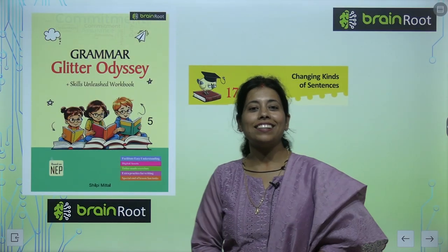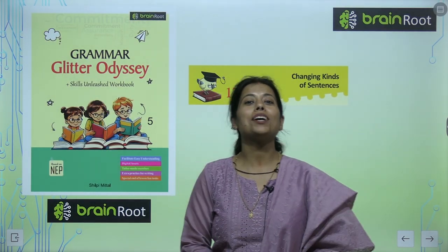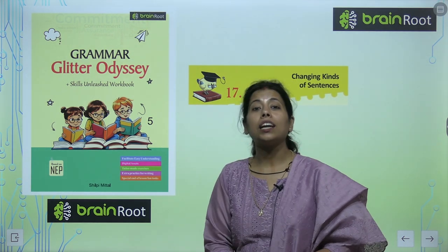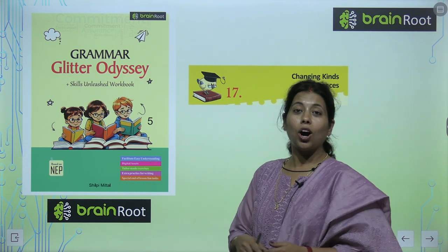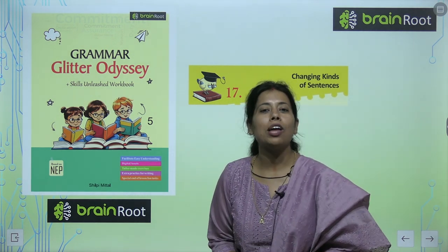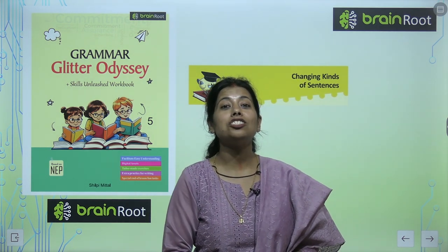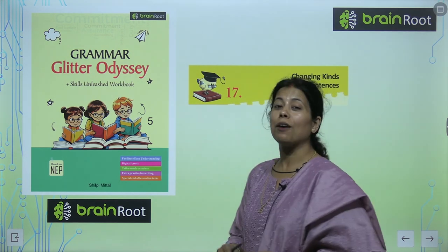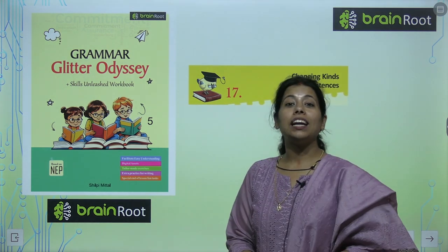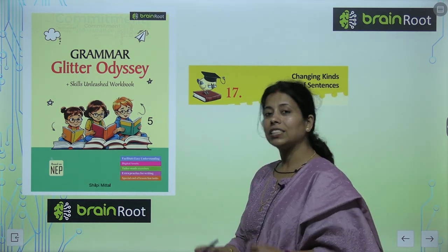Hello young ones, I am your English trainer Pooja. Welcome to my class. Today we will start Chapter 17 of our book — Grammar Glitter Odyssey of Grade 5 by Brain Road, a project of Amit Publishing House. The chapter is called Changing Kinds of Sentences.